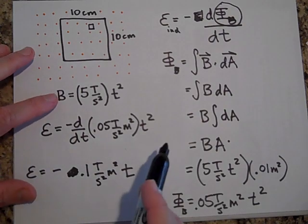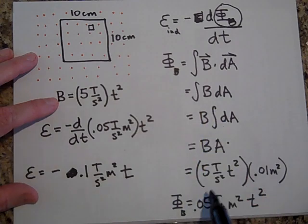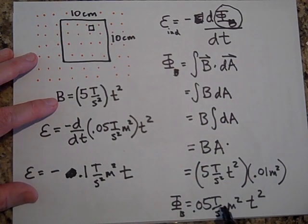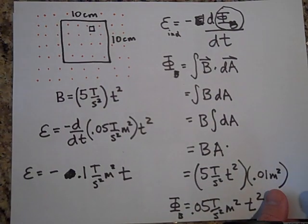So to just reiterate, what you have to do is you have to find your formula for flux first, your expression for flux, and then take the derivative. And usually, the derivatives are very straightforward.